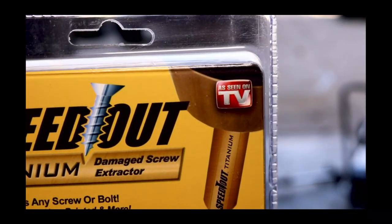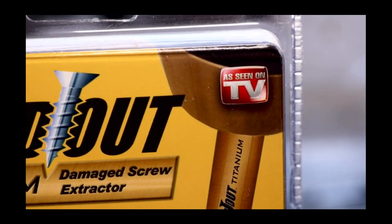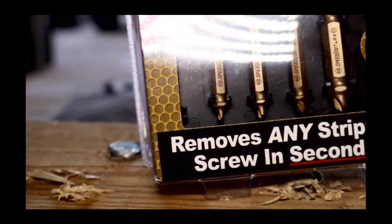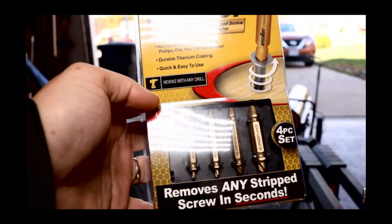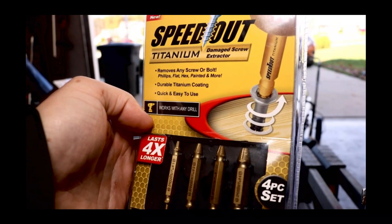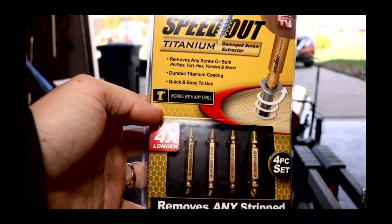So I was walking through my local Home Depot today and I came across the Speed Out. Said as seen on TV, so I knew it had to work perfectly. And as you can see, it tells you it will remove any stripped screw in seconds. Now, they had a couple different packages of these. One was the Cobalt, this was the Titanium.